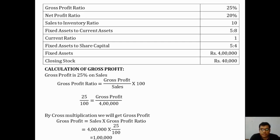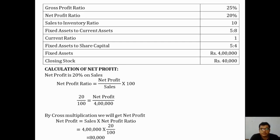Similarly, we calculate net profit. The net profit ratio is 20% on sales. The formula is net profit divided by sales into 100, so 20/100 equals net profit divided by 4 lakhs. By cross multiplication, net profit equals 4 lakhs into 20 by 100, giving a net profit value of 80,000.